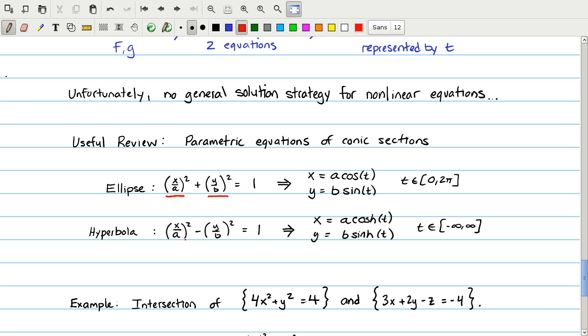Similarly, for a hyperbola, x over a squared minus y over b squared, this reminds us of the hyperbolic trig function identity, that cosh squared minus sinh squared equals 1. So we can let x equal a cosh t, and y equal b sinh t. And that will give us the parametric equations of a hyperbola.